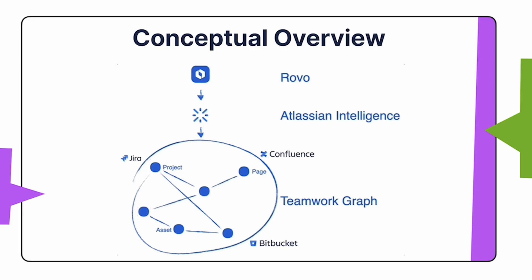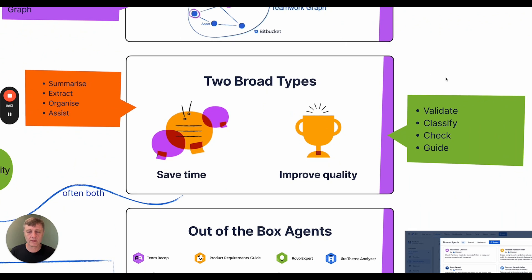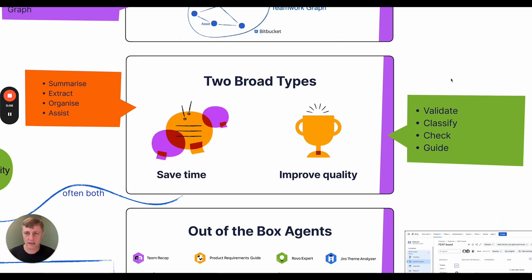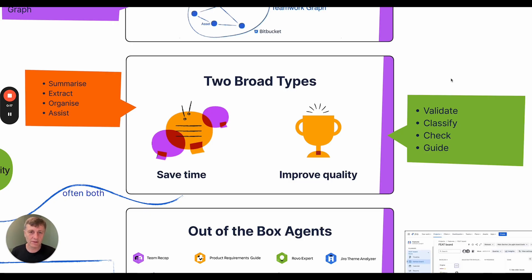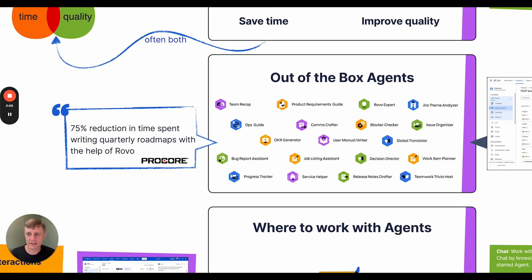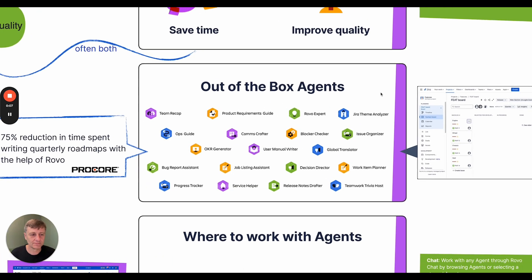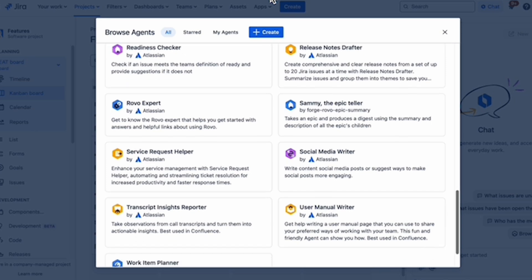Rovo agents can be configured to focus on specific areas of this data to avoid being distracted by irrelevant information. There are two broad types of Rovo agents, though many will exhibit characteristics of both. Time-saving agents often involve distilling and organising data, while agents focused on quality improvements typically involve manipulating information into new forms. Rovo includes a wide variety of predefined agents ready for use, and users can browse through these to discover ones that will help with their workflows.